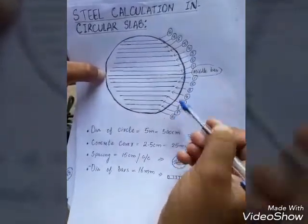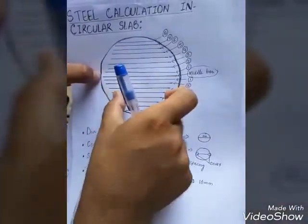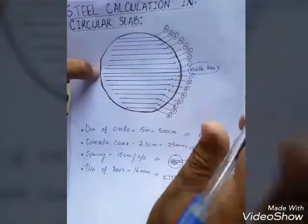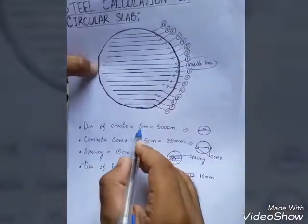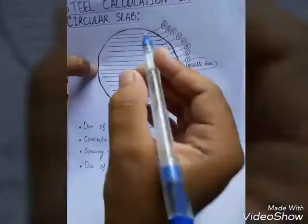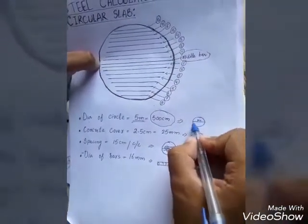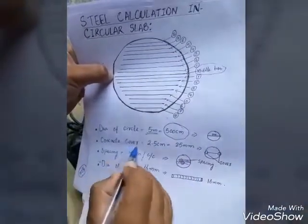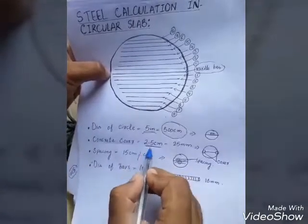Now the question is how to find the total length of each bar. This is my middle bar. The diameter of the circle is five meters, that is 500 centimeters. The concrete cover is 25 mm, that is 2.5 centimeters.